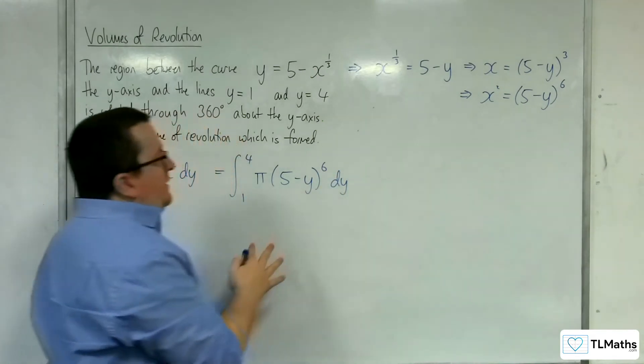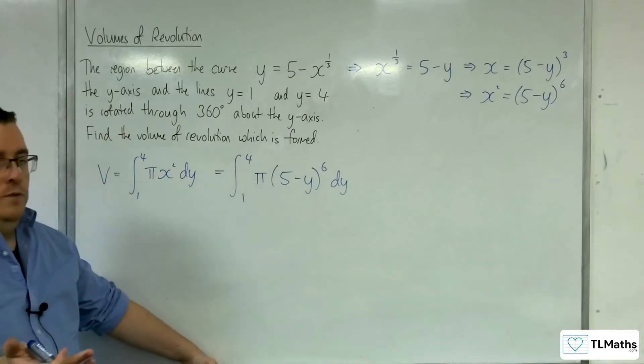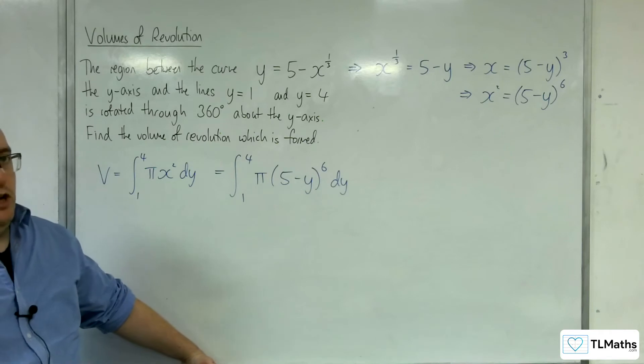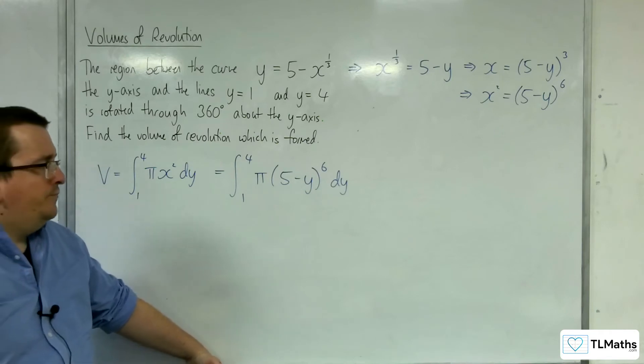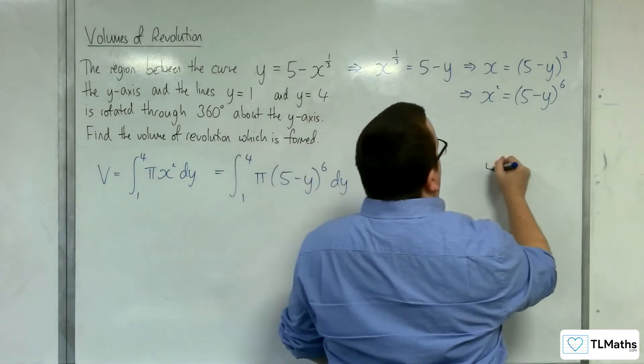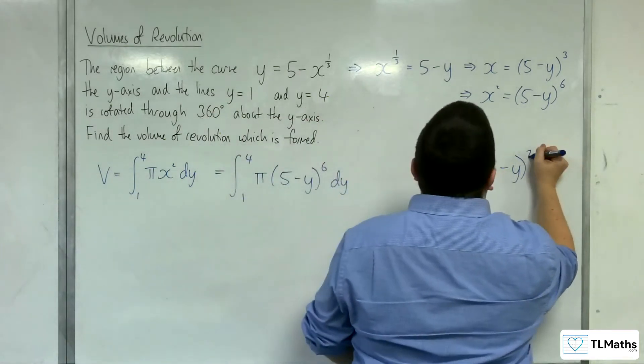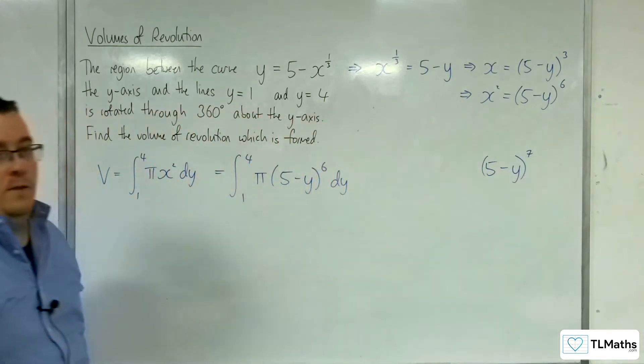So what I need to do is I need to either integrate this by substitution, or I can reverse the chain rule. Okay? So to reverse the chain rule, what I think about is having 5 minus y and add 1 to the power, because I know that that's going to be part of the process.